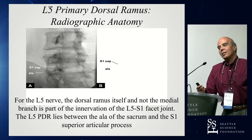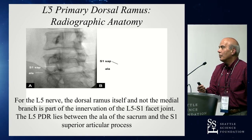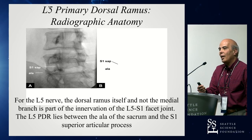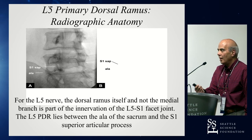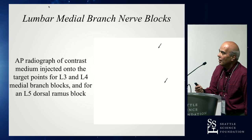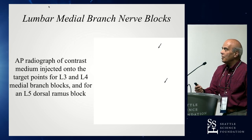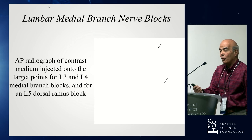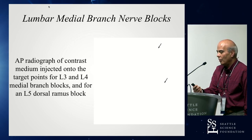For the L5 primary dorsal ramus itself — not the medial branch — it is responsible for the innervation of the L5-S1 facet joint. The L5 primary dorsal ramus usually lies between the ala of the sacrum and the superior articular process of S1. This is supposed to be a radiograph showing targets with contrast for L3, L4, and L5 medial branch and dorsal ramus blocks.